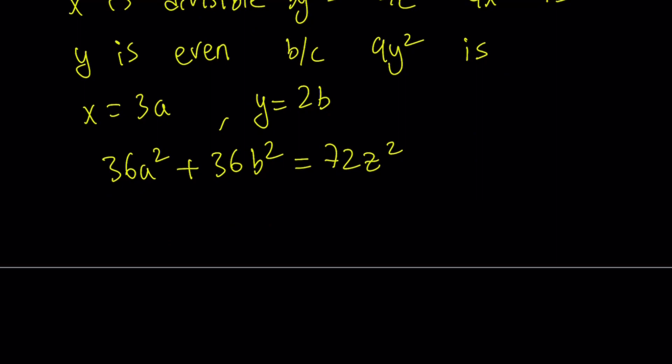We can go ahead and divide everything by 36, and this gives us a much simpler equation: a squared plus b squared equals 2z squared.